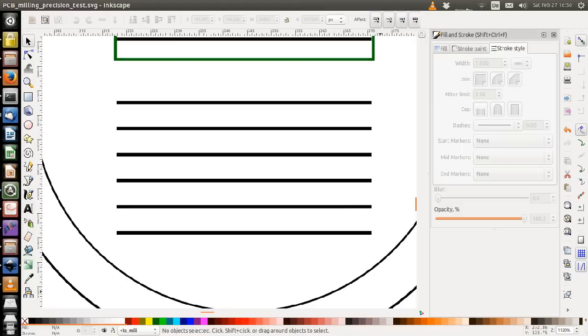Another interesting question is how fast the mill can go while still being precise. These lines here are milled with different speeds from 3 to 7 millimeters per second.